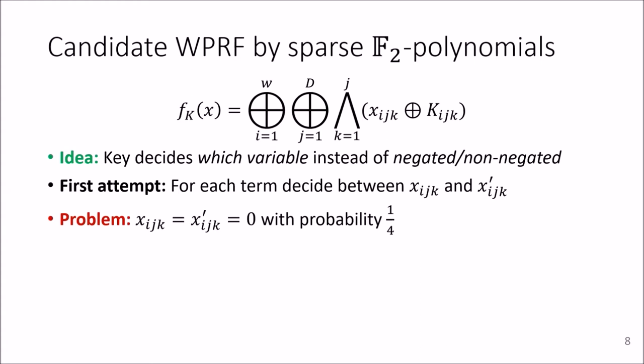There's a simple attack because the problem is that both Xijk and Xijk prime are zero with a too-large probability, with probability one-fourth. And if that happens, the whole AND term will be cancelled out. And this is also public when you know the input.